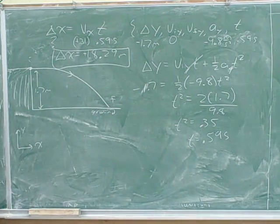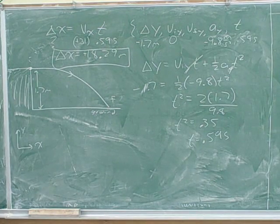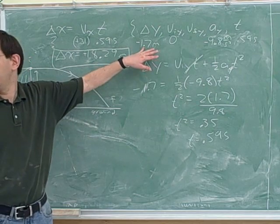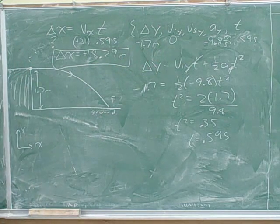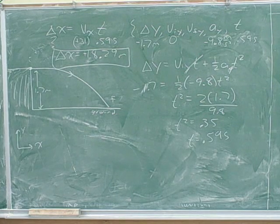This is a pretty typical projectile motion problem. Again, the most common mistake here is not putting the right sign on the displacement. So put the right sign on everything. This was a little bit on the easy side because we didn't have to break anything into components.